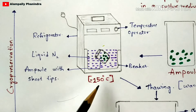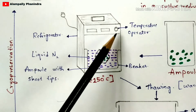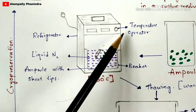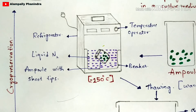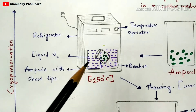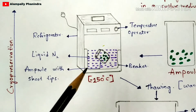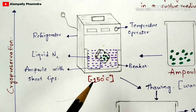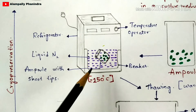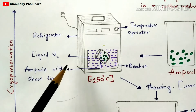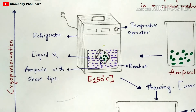The temperature applied by this refrigerator is minus 150 degrees Celsius, controlled by a temperature operator with digital display. You may wonder — will ice form at minus 150 degrees Celsius? The answer is no. Liquid nitrogen does not have the capacity to form ice, even if you apply minus 160 or minus 200 degrees Celsius, because the chemical reaction required to form ice does not occur in liquid nitrogen.